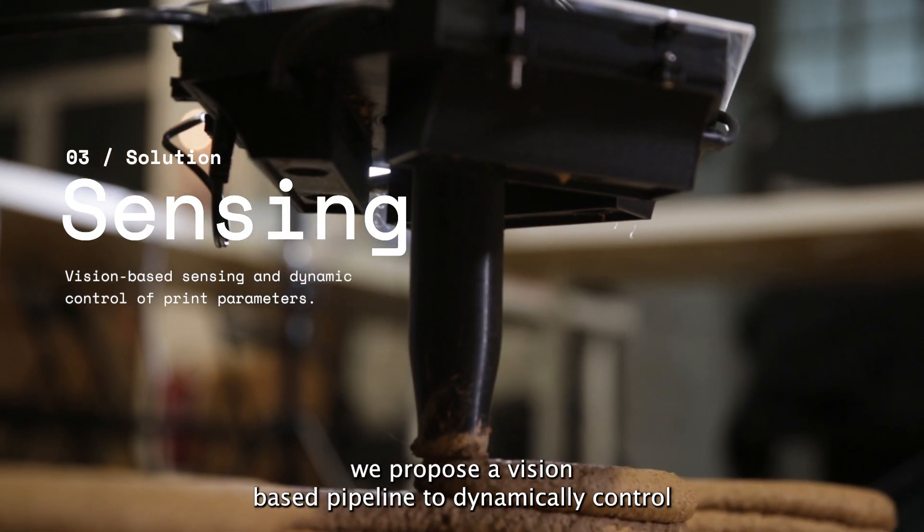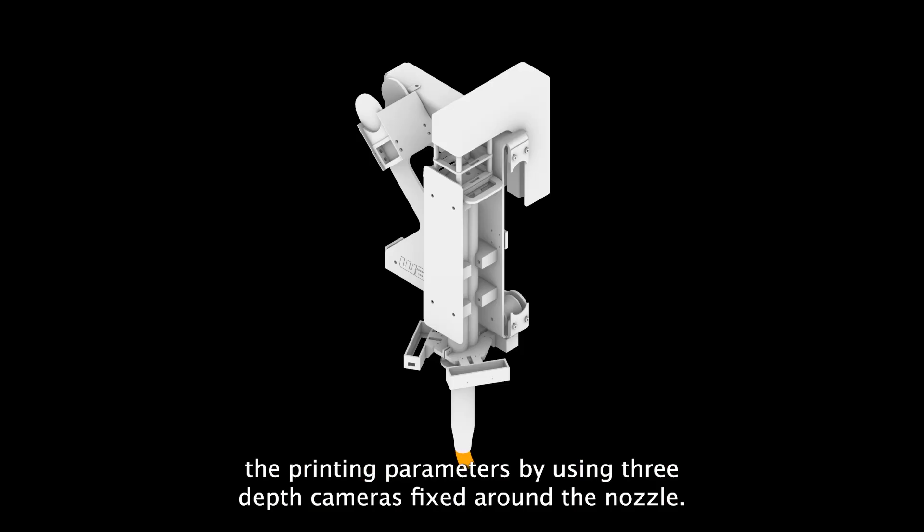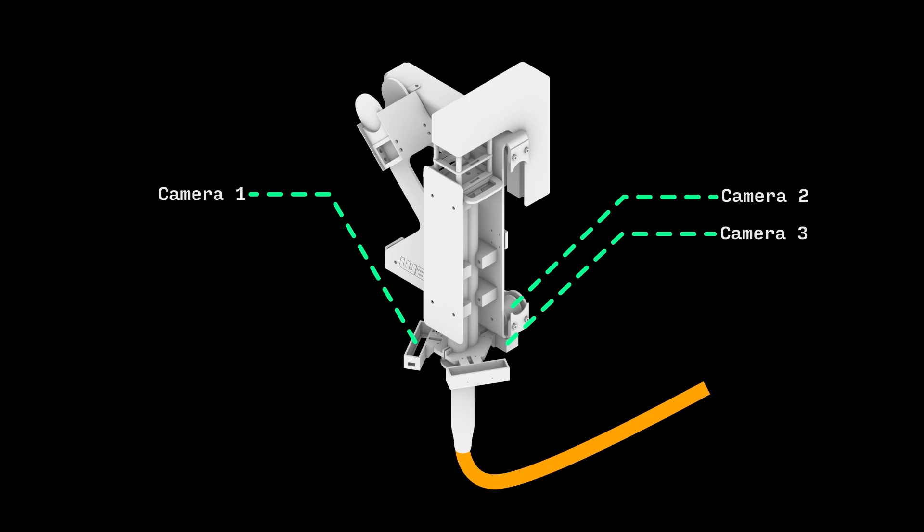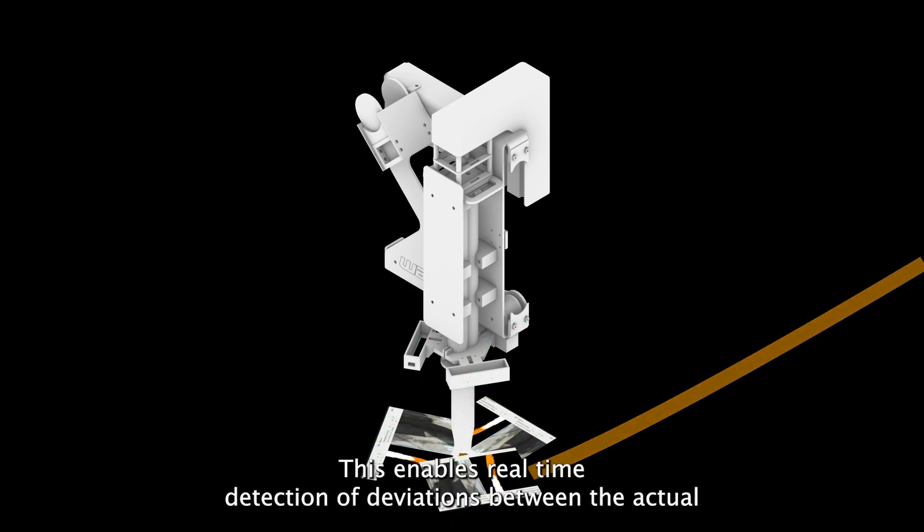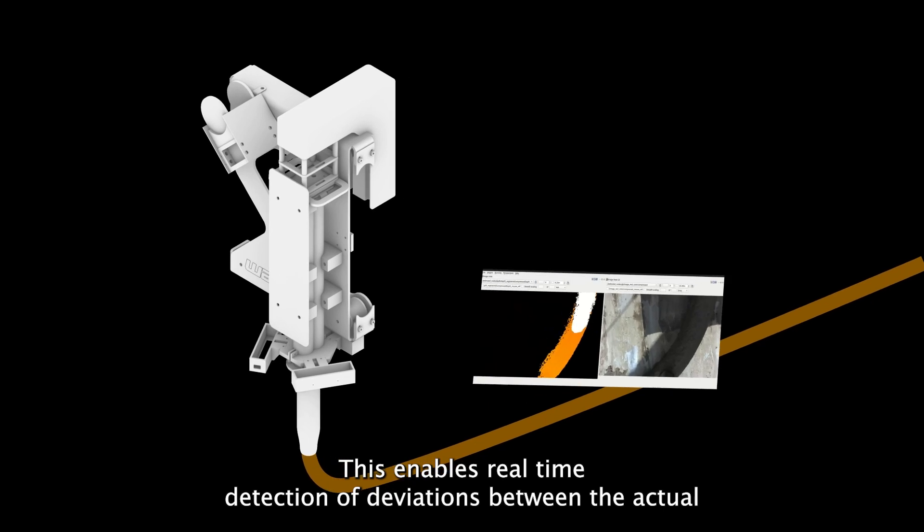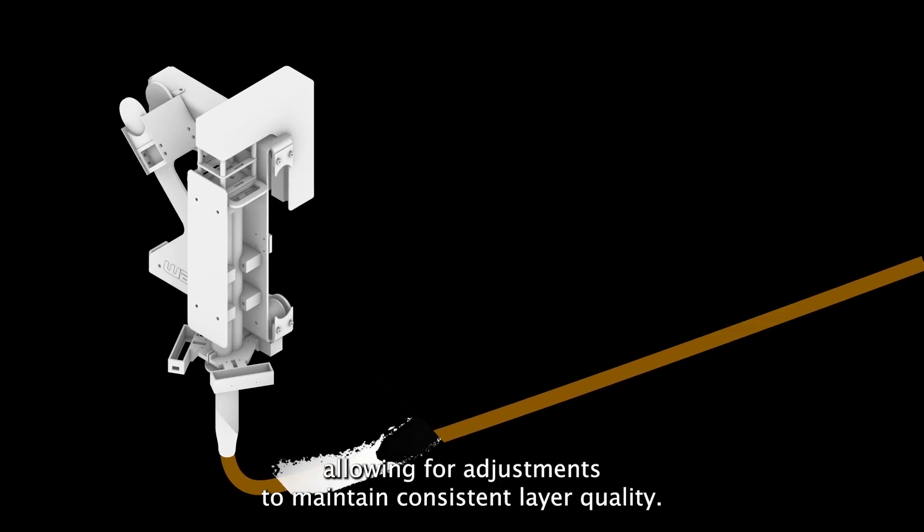To tackle this, we propose a vision-based pipeline to dynamically control the printing parameters. By using three depth cameras fixed around the nozzle, the system can monitor the width of the just deposited layer. This enables real-time detection of deviations between the actual and the intended print, allowing for adjustments to maintain consistent layer quality.